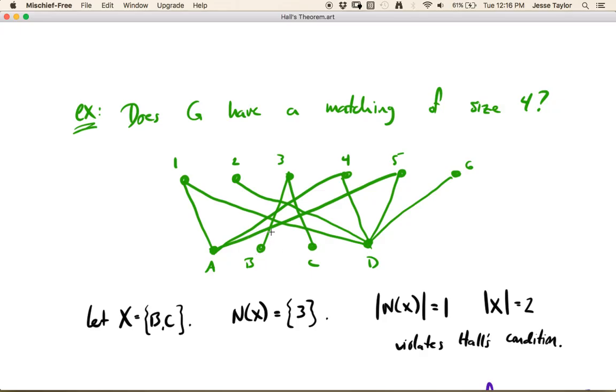So like if you say, oh, I'm going to take this edge, that means there's no possible edge that you can use to match C. So this sort of Hall's condition encapsulates this idea that there's not enough space to go around. So let's try another one.